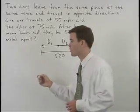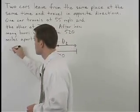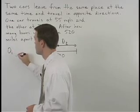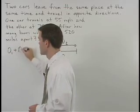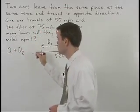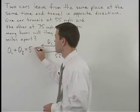So setting up a little equation we have the distance the first car travels, or D1, plus the distance the second car travels, or D2, equals 520.